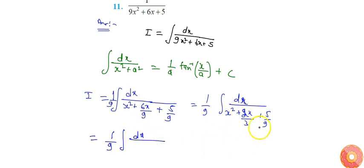We add and subtract 1/9, so I can get (x + 1/3)² plus 1/9 minus 1/9.